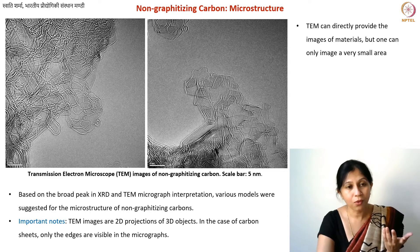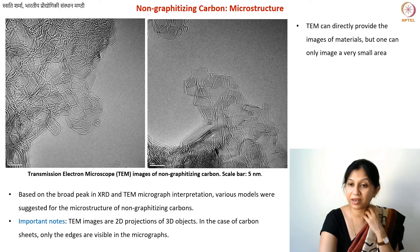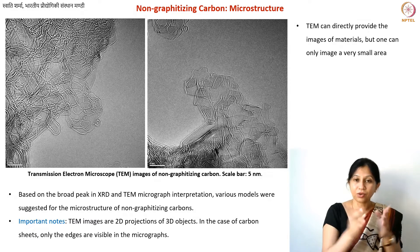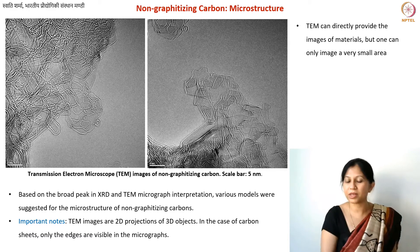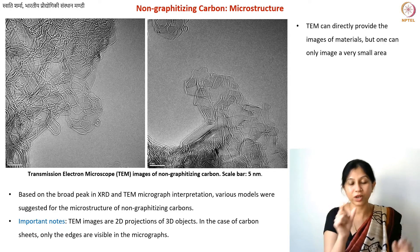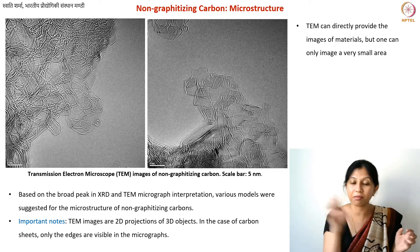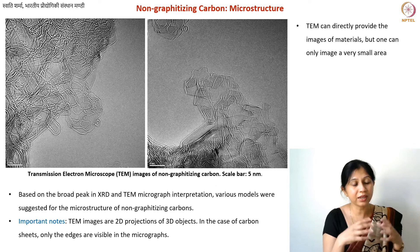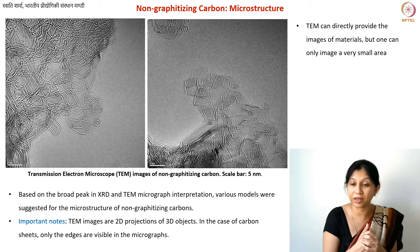Now, when you can see images directly using TEM, why would you need X-ray diffraction? Because the scale bar is 5 nanometers, so your entire image covers only about a 50 nanometer piece of your material. When talking about bulk carbons, you want to know globally whether what is valid for that small region is also valid everywhere. You can take images at many different points, but to understand how crystallinity or crystal sizes develop with heat treatment temperature, you need other techniques.